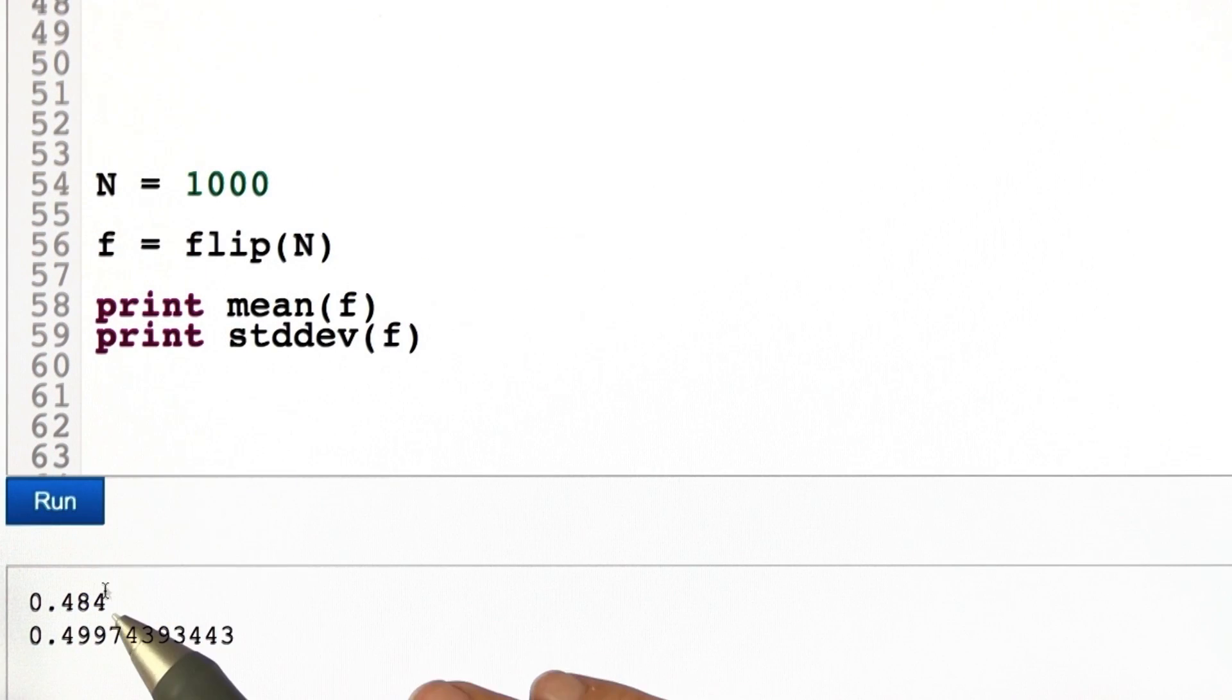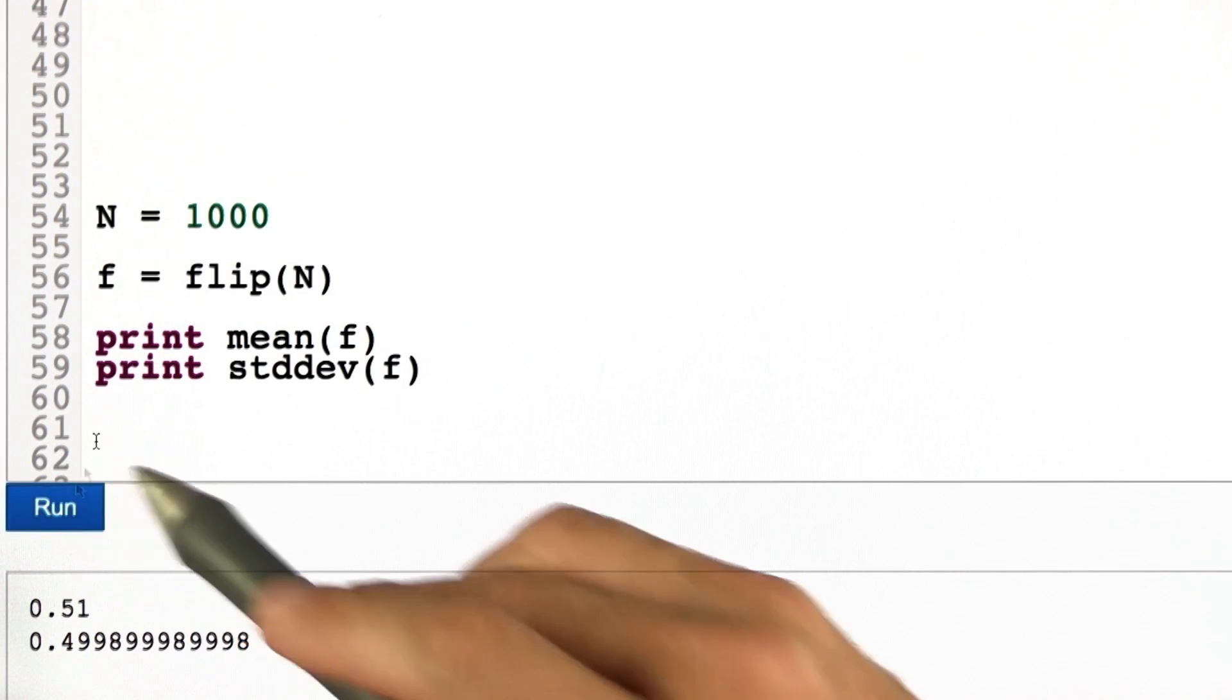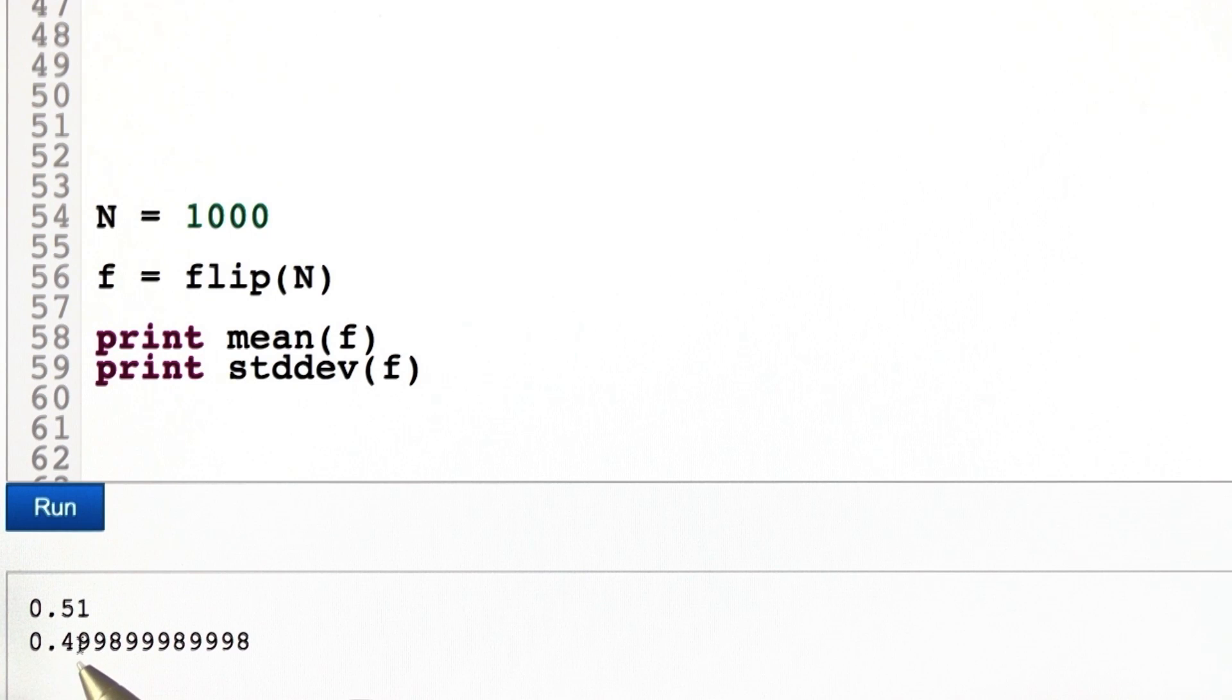So here's a typical outcome for this code. If I run it, the mean might be 0.484. There's a standard deviation. If I run it again, I get a different mean, 0.51, and a different standard deviation.